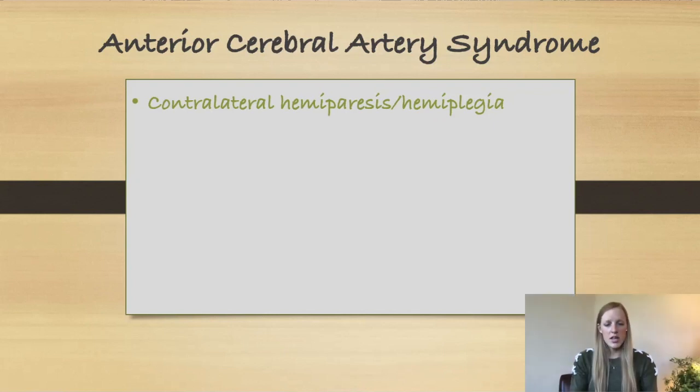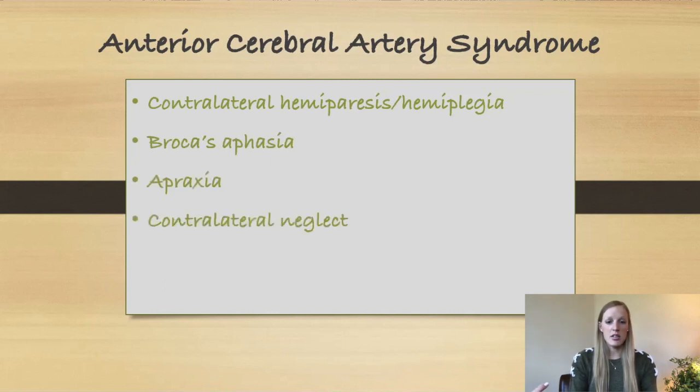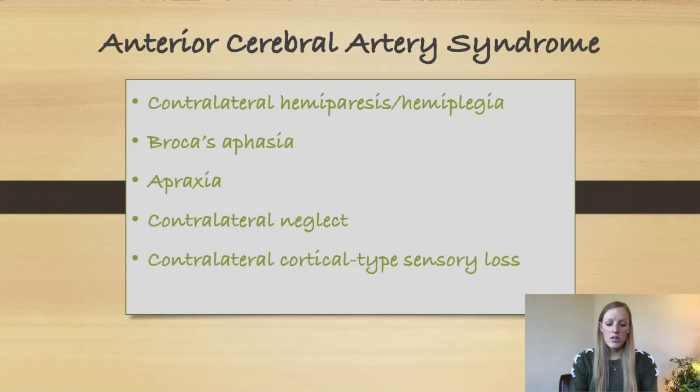Hemiparesis is not the only symptom we're going to see in an anterior cerebral artery stroke. Let's take a look at some other symptoms. We could also see Broca's aphasia, we could see apraxia, we could see contralateral neglect, we could see contralateral cortical type sensory loss, and we can see a varying degree of frontal lobe dysfunctions.